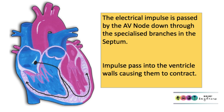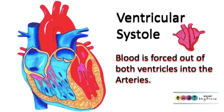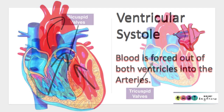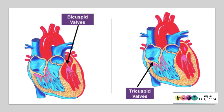The impulse passes down into the ventricles around the bottom of their walls, causing the ventricle walls to contract. When the ventricle walls contract, this is known as ventricular systole. The blood is forced out of both ventricles into the arteries, and this build-up in pressure causes the bicuspid and the tricuspid valves to close.